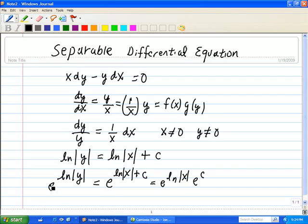Now we note that the operation of exponential and natural logarithm cancels each other out, so that leaves the absolute value of y equals absolute value of x, and we can say that e to the c is basically another constant, which we'll call c1.